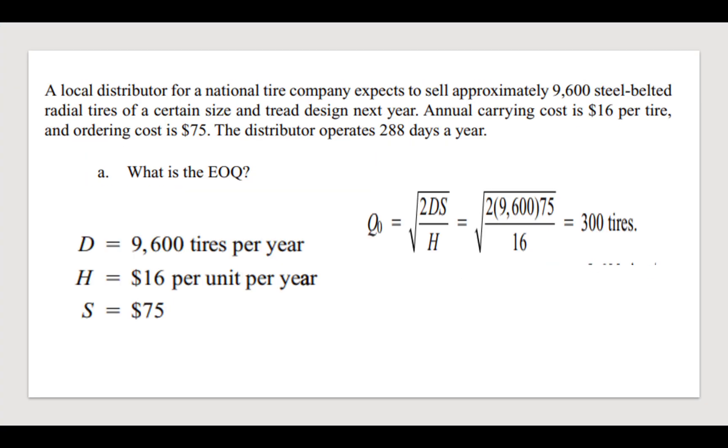We have to first of all determine what is the EOQ. The formula for EOQ is under root of 2DS by H. D is given, H is given, S is given. When you put these values in the formula, you will be getting 300 tires. If in some questions you get like 292.69, and we all know that quantity cannot be in decimals, so we are going to round it off to 293. You have to always round off the quantity if it comes in decimals.